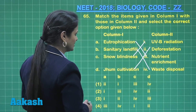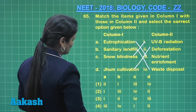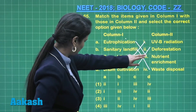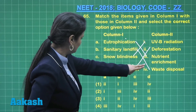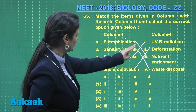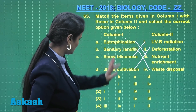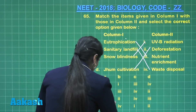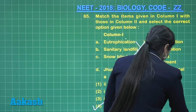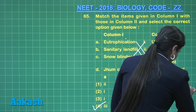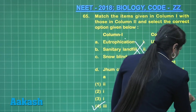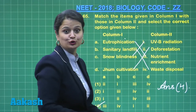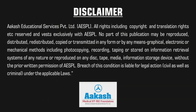So jhum cultivation is responsible for deforestation because the recovery period is not given for the area to rebound. The right answer for question 65 is: eutrophication with three, sanitary landfill with waste disposal, snow blindness with UVB — so the right answer is option number four. Now let's move on to question number 66.